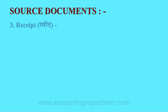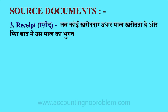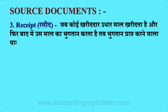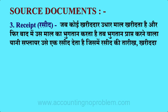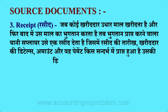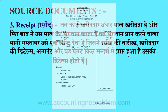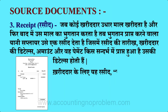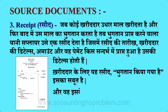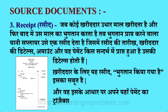तीसरा Document है Receipt। जब कोई खरीदार उधार माल खरीदता है और फिर बाद में उस माल का भुगतान करता है, तब भुगतान प्राप्त करने वाला यानी Supplier उसे एक Receipt देता है। जिसमें रसीद की तारीख, खरीदार की details, Amount और वो Payment किस संदर्भ में प्राप्त हुआ है उसकी details होती है। नमूने के लिए हम आपको एक Receipt दिखा रहे हैं। खरीदार के लिए ये Receipt भुगतान किया गया इसका सबूत है और वो इसके आधार पर अपने यहाँ Payment का Transaction Record करता है।